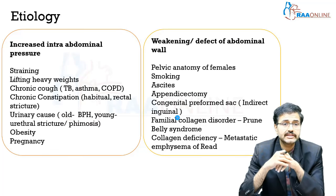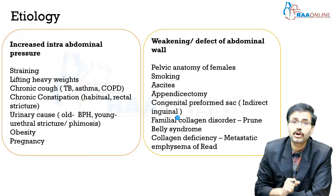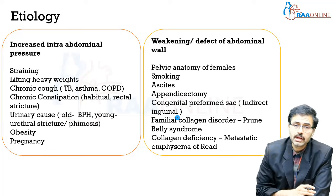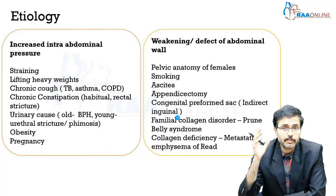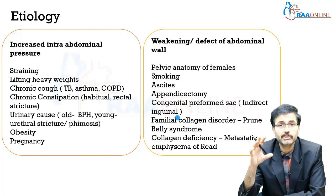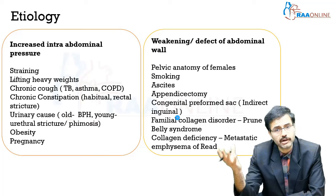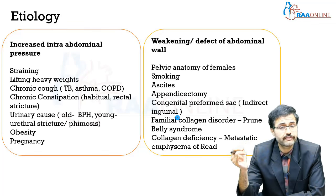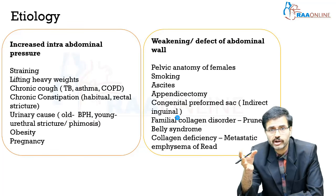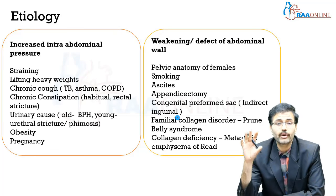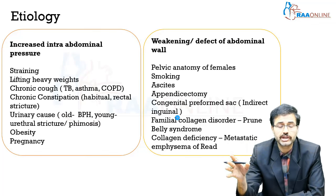Obesity can result in increased intra-abdominal pressure leading to hernia. Pregnancy is another very important cause for hernias in females. A weakening or defect in the abdominal wall occurs because of the pelvic anatomy of females — female pelvic anatomy is different from male pelvic anatomy, making females more prone to develop a hernia. Smoking is a very commonly known etiological factor. Appendicectomy or any other surgical procedures can cause an area of weakness through which herniation can occur.